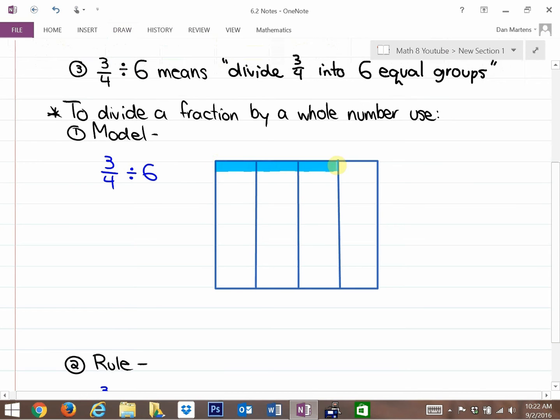I've broken this into quarters and I need to shade 3/4. Here is 3/4. This is 3/4. The concept is saying we need to divide 3/4 into 6 equal groups.